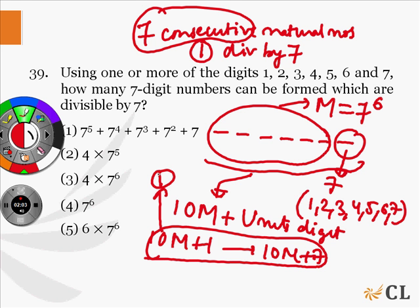So, for 7 to the power 6 possible values of m, there will be 7 to the power 6 numbers that will be exactly divisible by 7. And hence, 4 is the correct choice.